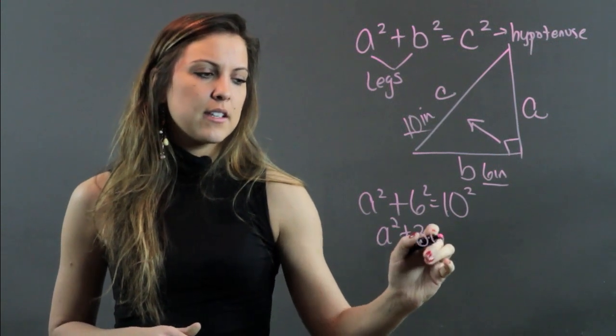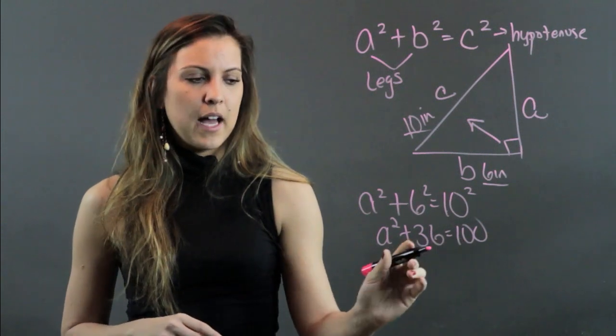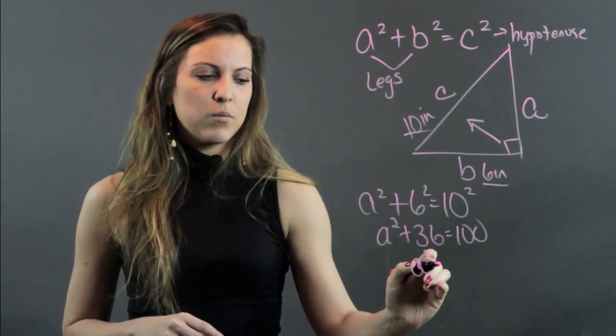A squared plus 36 equals 100, and now this is a two-step equation. I'm going to subtract 36 from both sides, and when I do that I'm going to get A squared equals 64.